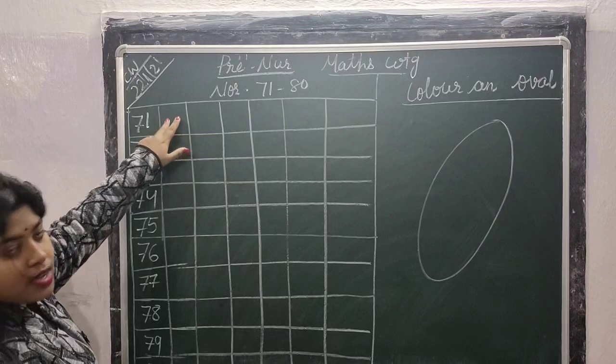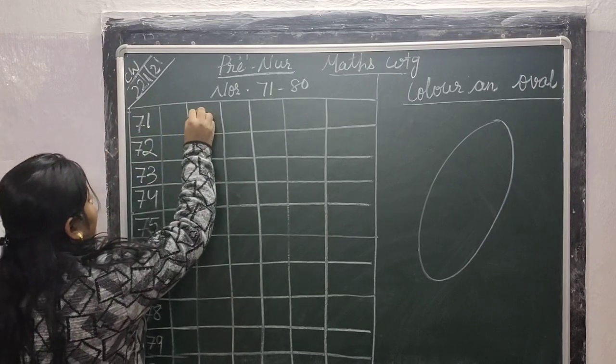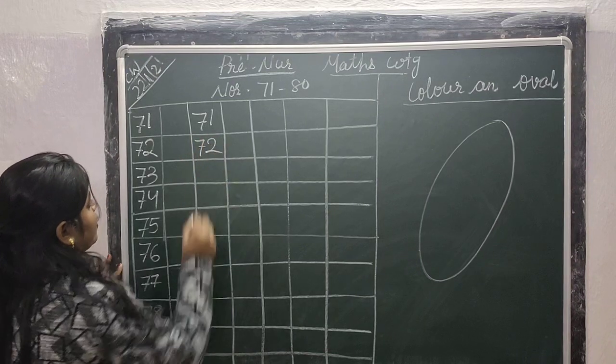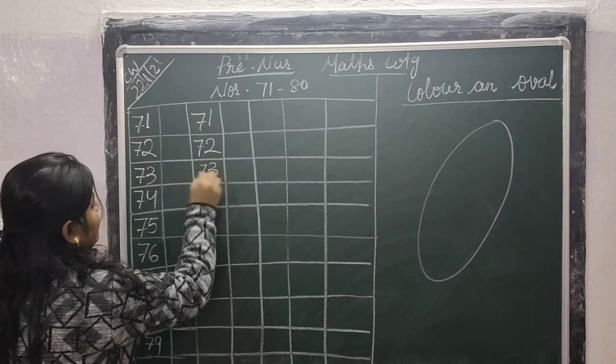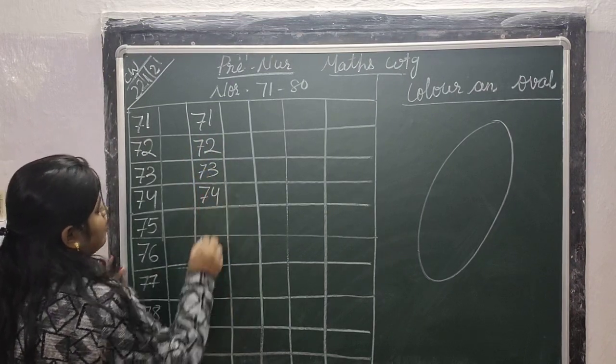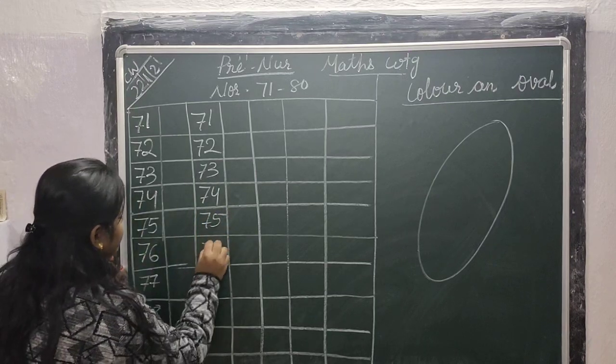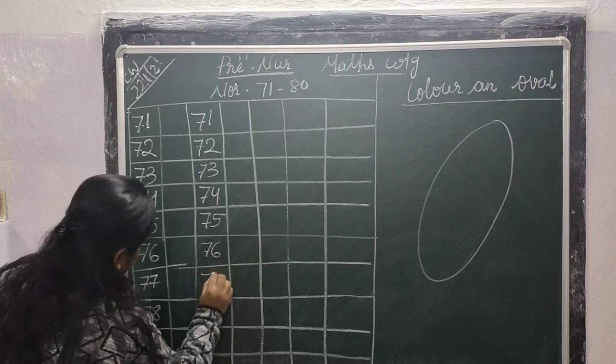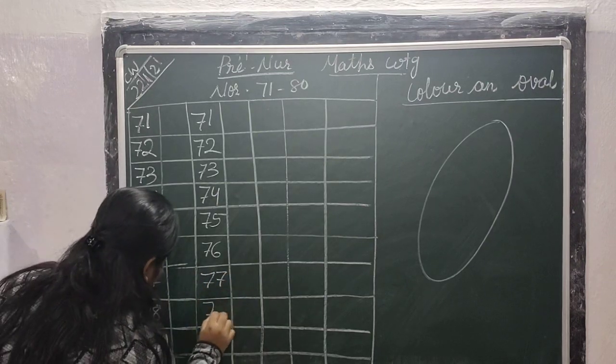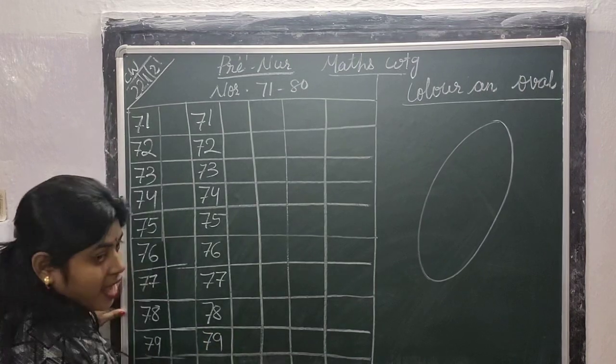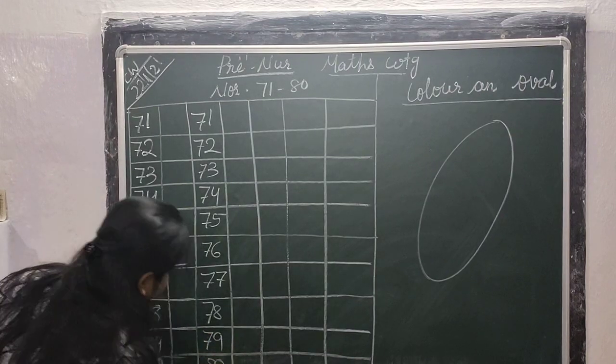So children, leave one book. Then write, 71 is 71, 72 is 72, 73 is 73, 74 is 74, 75 is 75, 76 is 76, 77 is 77, 78 is 78, 79 is 79, 80 is 80.